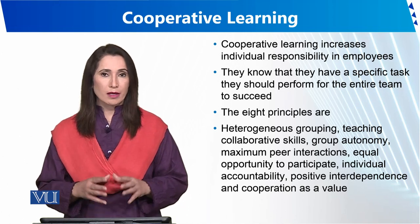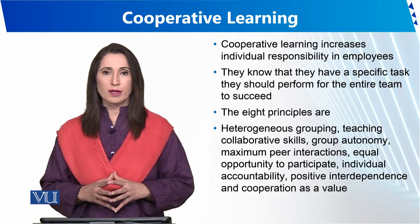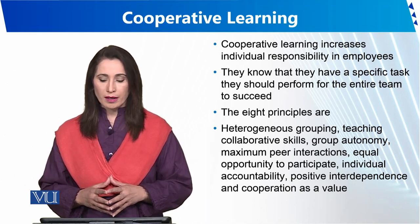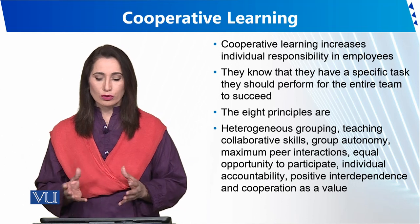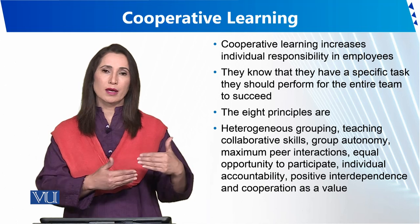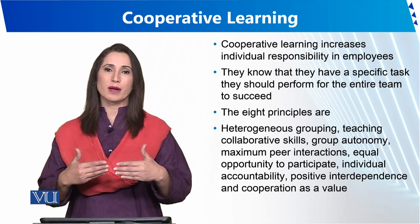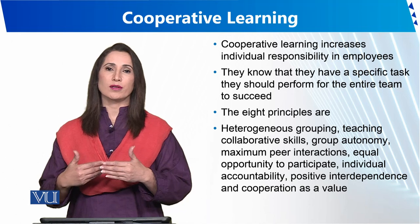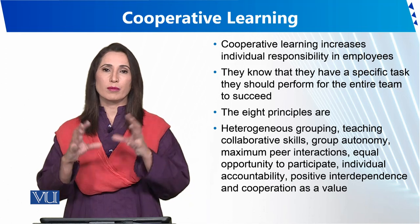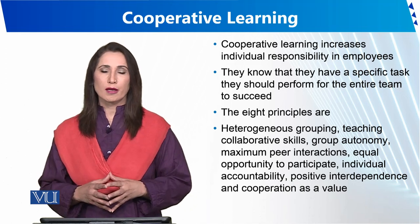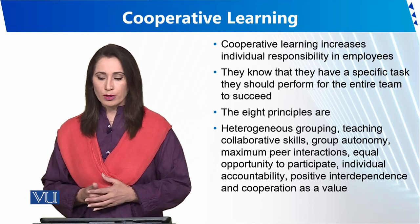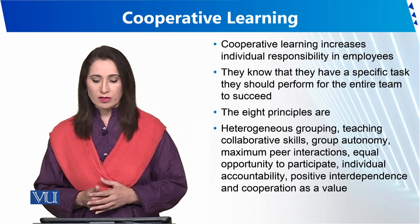Cooperative learning has eight principles through which it can be implemented effectively. The first is heterogeneous grouping — mixed ability groups where every child's economic status, intelligence level, or work speed doesn't matter. In these mixed ability groups, each child learns from the abilities of others. This also involves teaching collaborative skills — how to work collaboratively — so children learn teamwork.